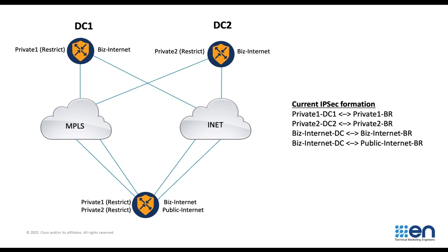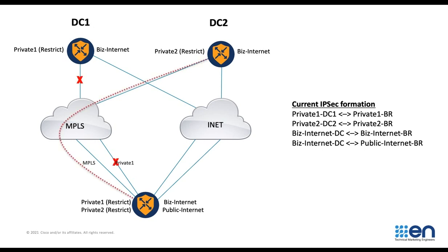It gets more complicated if you have different types of requirements, such as a branch with dual MPLS. With this, you have a couple of options. One of those is creating two different types of colors, like private 1 for data center 1 and private 2 for data center 2. With that, private 1 on branch connects to private 1 on data center 1, and private 2 connects to private 2 on data center 2. There are some things to consider with this design — if you have some failures, you won't be able to traverse from private 1 to private 2. It will also make your traffic engineering more complex.